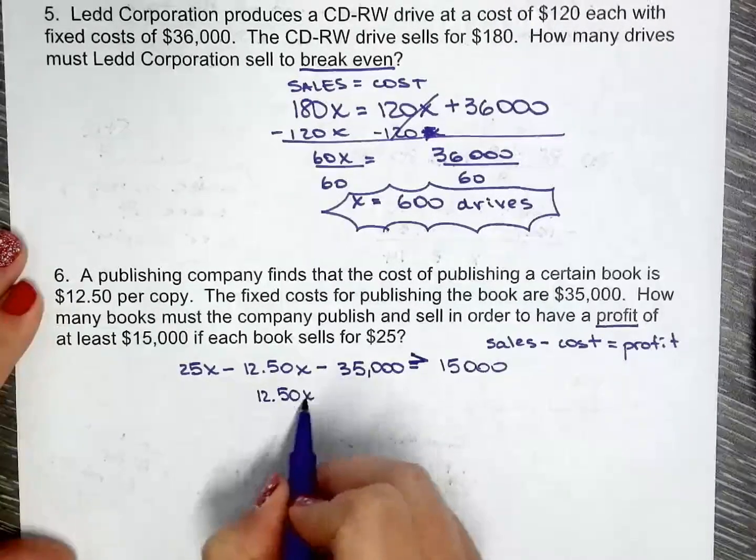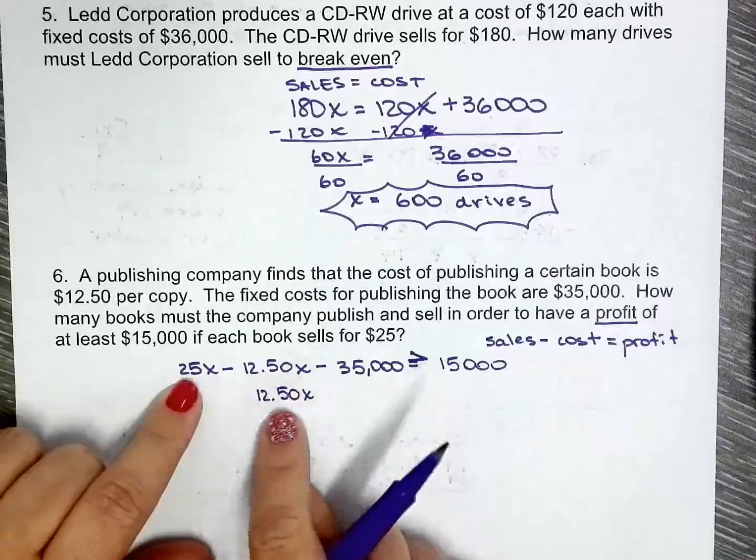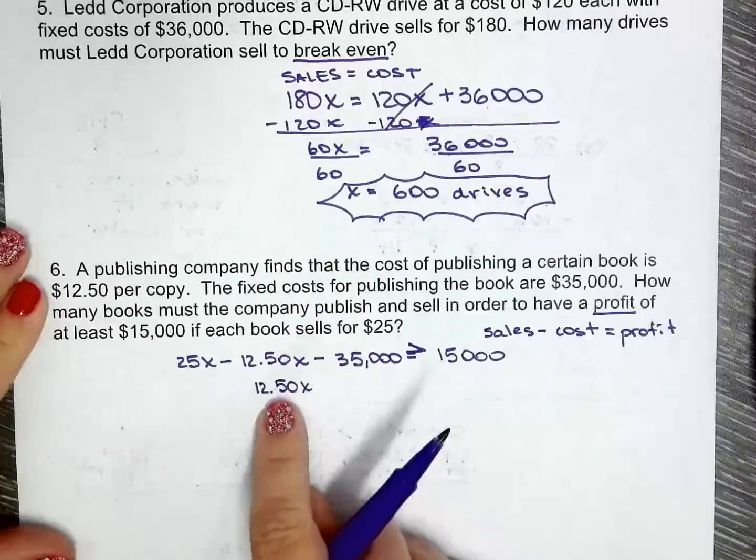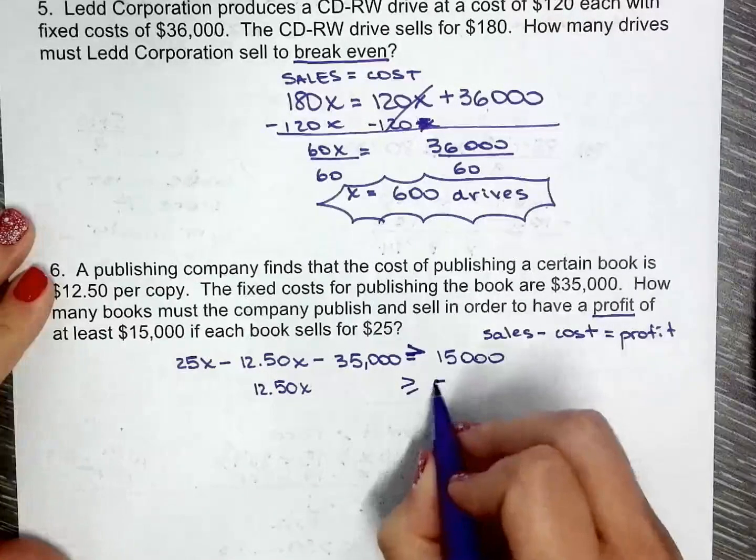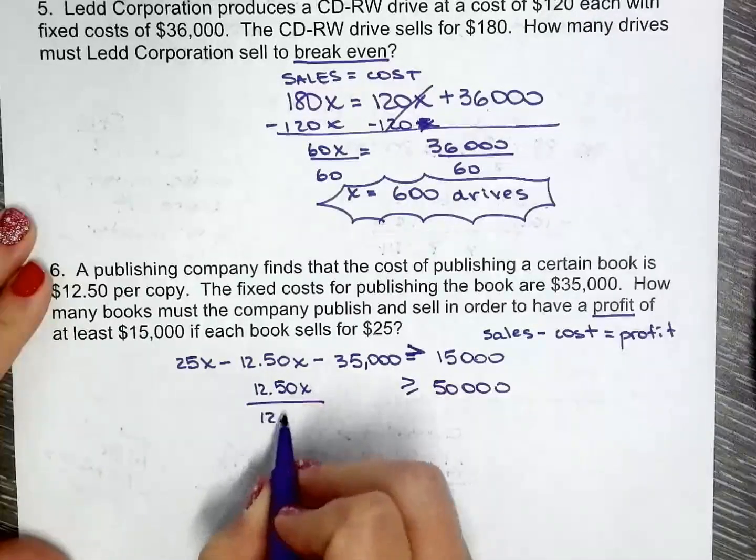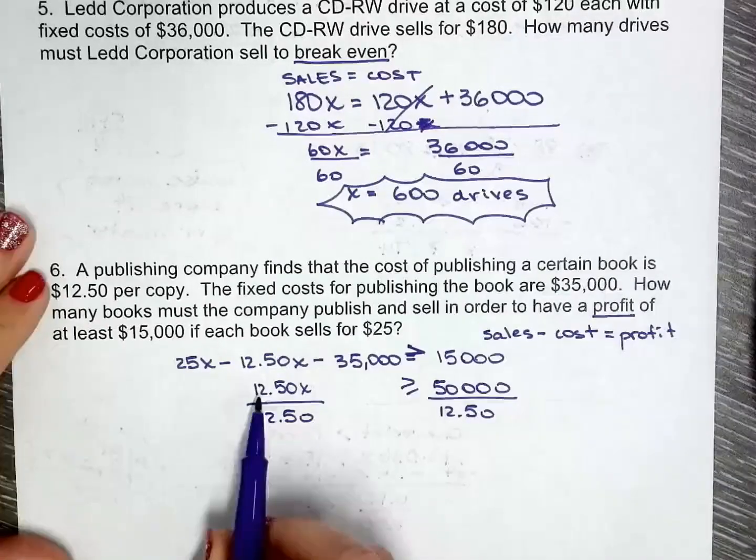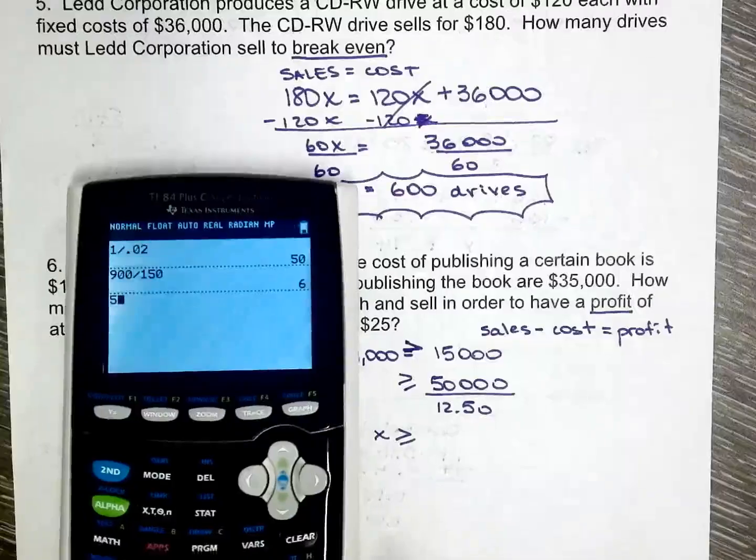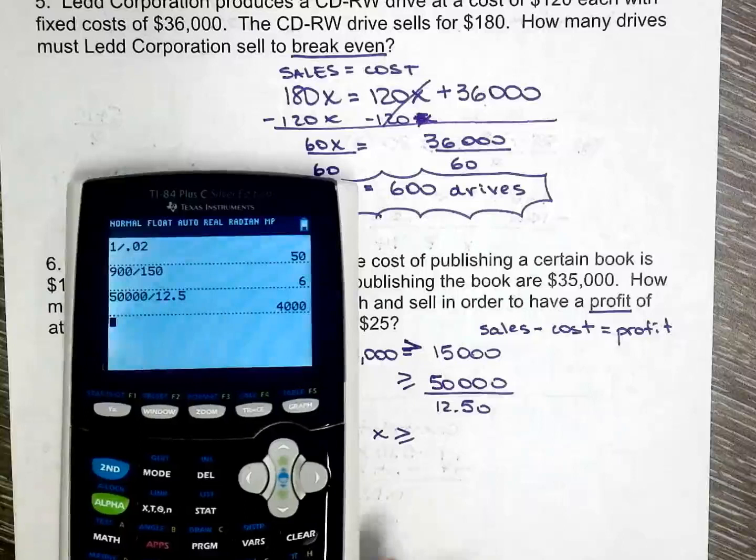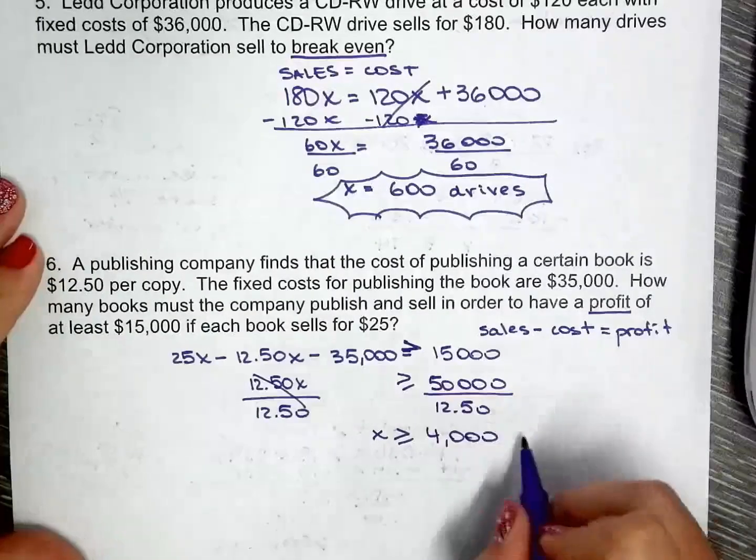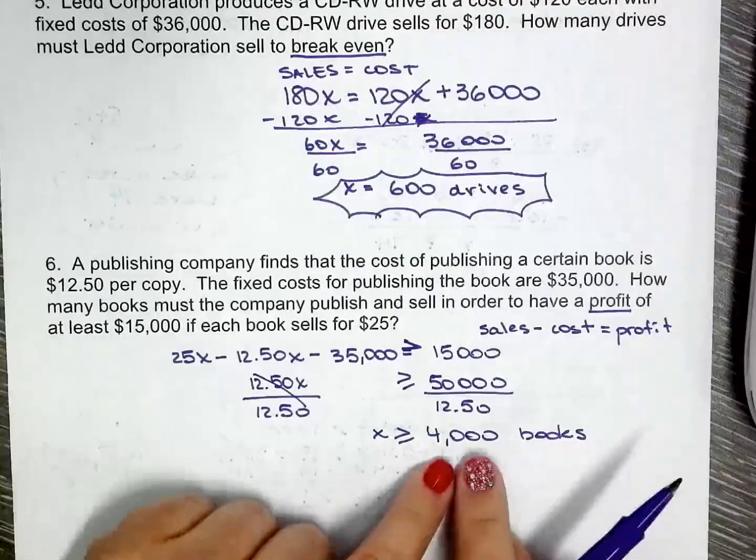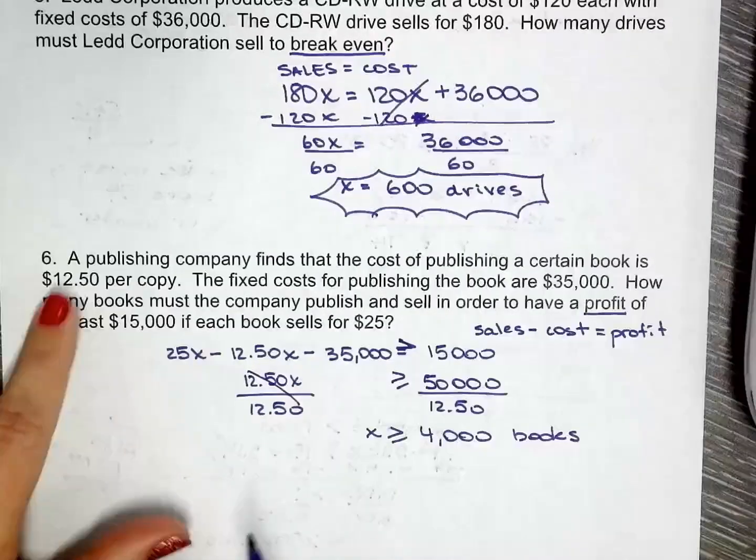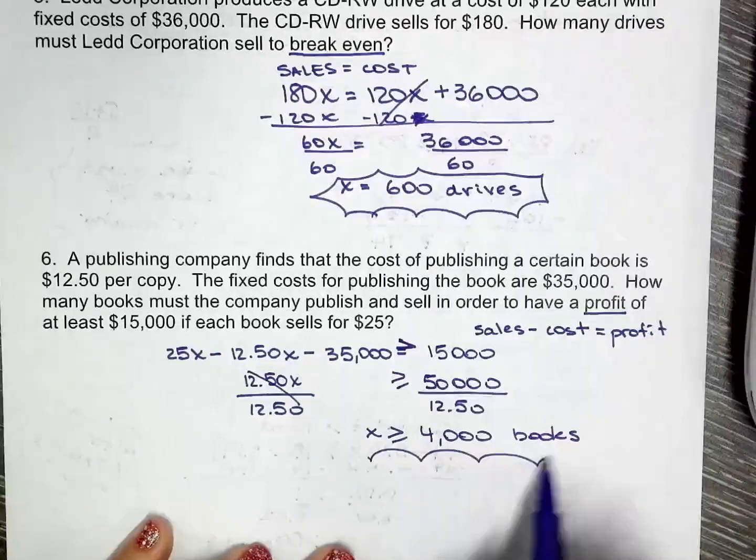Now you divide both sides by $12.50. Because $12.50 divided by $12.50 is 1, that leaves me with 1X is greater than or equal to 4,000 books. Look at that. So you have to sell at least 4,000 books to make a profit of $15,000. You have to pay for your fixed cost, you have to pay to make each copy, of course, and then 4,000 books.